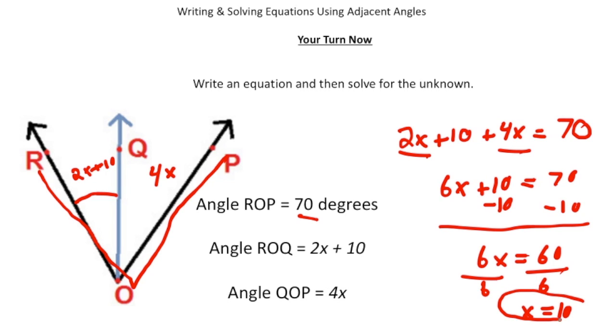Now when given the chance, always plug it in to make sure it works. So now that we know that X is 10, well, I can say 4 times 10 is 40 degrees. And then if X is 10 here, 2 times 10 is 20, plus 10 is 30 degrees. And look at that, 30 degrees plus 40 degrees gives us our magical number of 70 degrees. All right. How'd you do?